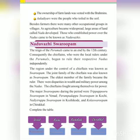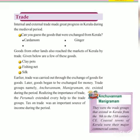The major Swarupams during the period were: Tripappur Swarupam in Venad, Perumpadappu Swarupam in Kochi, Nedirapur Swarupam in Kozhikode, and Kolathiri Swarupam in Chirakkal. We can see a table in your textbook — let's fill in all the entries corresponding to each Swarupam.